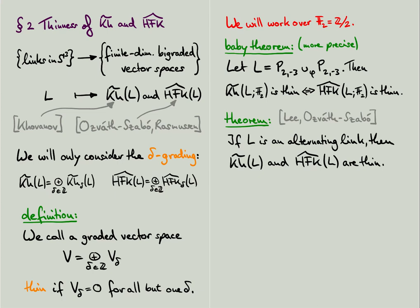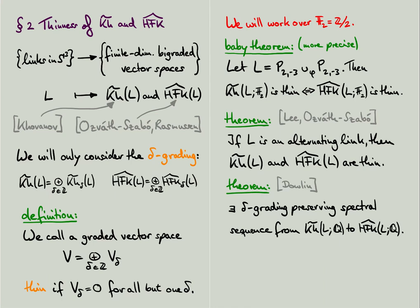Secondly, there exists a spectral sequence due to Nathan Dowlin from Khovanov homology to knot-Floer homology, and this spectral sequence preserves the delta grading. So if you have a link whose Khovanov homology is thin, then the same is true for its knot-Floer homology. So that would imply one direction of our baby theorem.